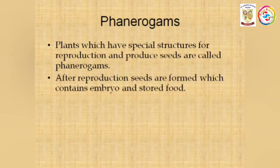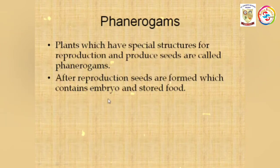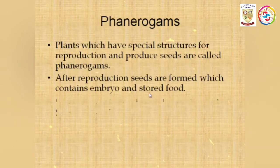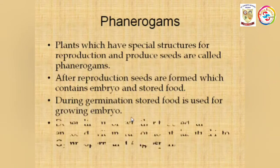After reproduction, seeds are formed which contain embryo and stored food. The embryo is further developed into a new plant. During germination, the stored food is used for growing the embryo. When the seed germinates, the stored food supports the development of the embryo into a new plant.